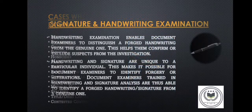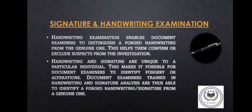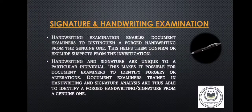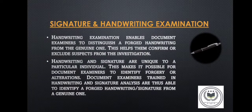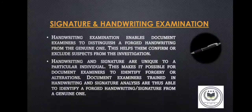Signature and Handwriting Examination: Handwriting examination enables document examiners to distinguish forged handwriting from genuine handwriting. This helps them confirm or exclude suspects from the investigation. Handwriting and signature are unique to a particular individual, making it possible for document examiners to identify forgery or alterations. Document examiners trained in handwriting and signature analysis are thus able to identify a forged handwriting or signature from a genuine one.